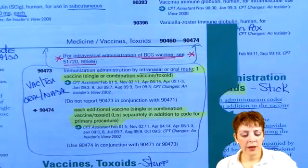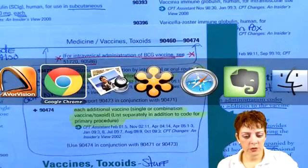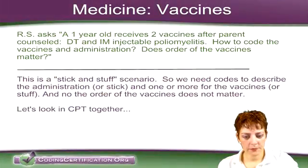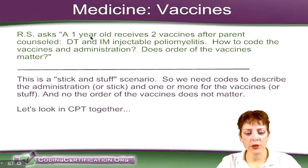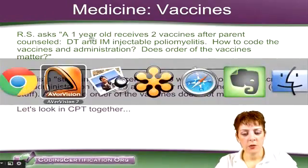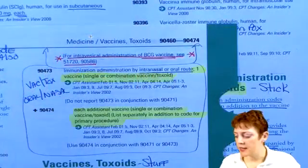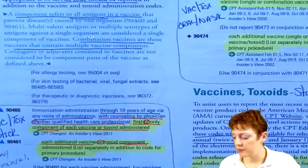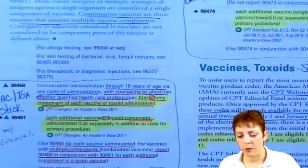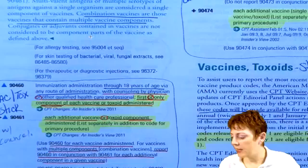For our question, it was injectable and it did involve counseling with a one-year-old. So we can see that we're going to be in the 90460 bubble. Then what comes next after the stick codes are the stuff codes — the guidelines are talking about vaccines, toxoids, and stuff.